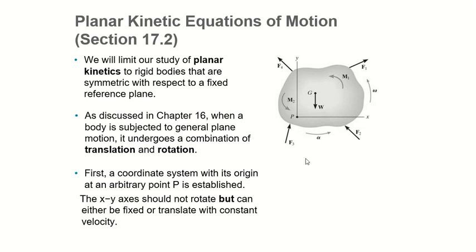In the second part of the chapter on sovereignty, we'll get into planar kinetics and connected equations. We're going to deal with symmetric rigid bodies. Since we're bringing in symmetry, you always have a plane, and without a fixed reference plane we can't understand the symmetric system. We call this the planar kinetics.